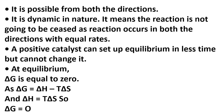At equilibrium, the Gibbs free energy, delta G, is equal to zero, where delta G equals change in enthalpy (delta H) minus temperature (T) times change in entropy (delta S). So delta H is change in enthalpy, T is temperature, and delta S is change in entropy. These are the conditions at equilibrium.